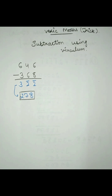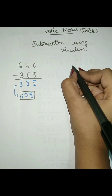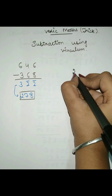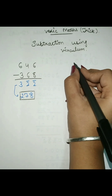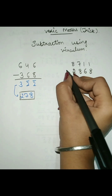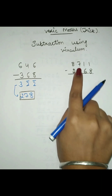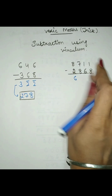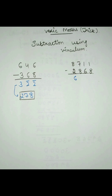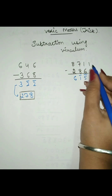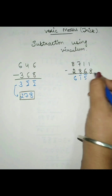Now next, if we want to subtract 2868 from 8711, then again by using vinculum: 8 minus 2 is 6. Then 7 minus 8 is not possible, so after subtracting we get minus 1, which is written as 1 bar. Then 1 minus 6 again is not possible, and by using vinculum we get minus 5, written as 5 bar. And 1 minus 8 again will become minus 7, written as 7 bar.